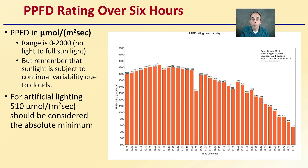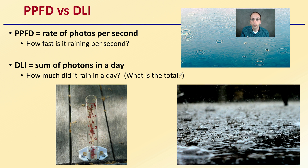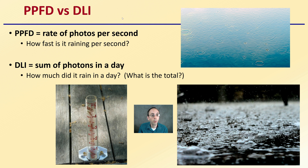For artificial lighting, 500 micromoles per meter squared per second should be considered the absolute minimum when growing indoors — really want to be higher than that. How does PPFD compare to DLI? PPFD is the rate of photons per second — think of it as how fast it's raining: a light drizzle or a downpour. DLI is the sum of photons in a day — that's like asking how much did it rain today in total. That's how we compare PPFD versus DLI.